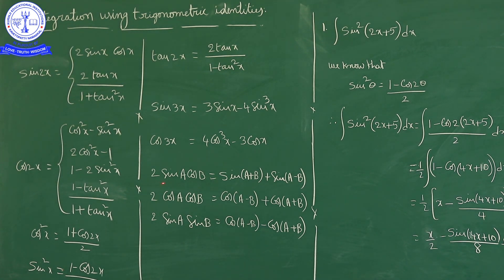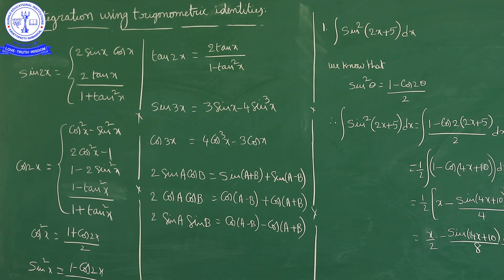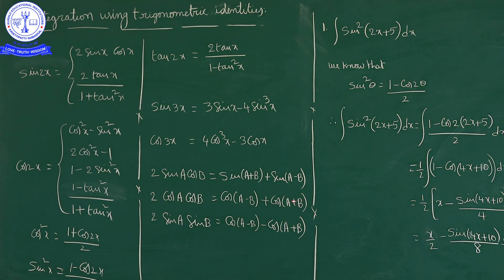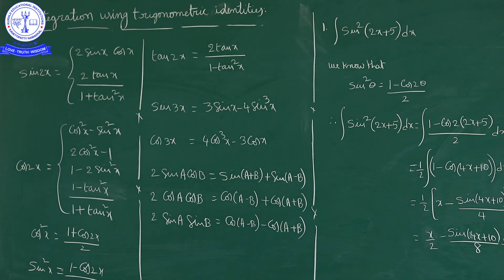Next formula: 2 sin A cos B equals sin(A+B) plus sin(A−B). This comes from adding sin(A+B) and sin(A−B) expansions. Also, 2 cos A cos B equals cos(A−B) plus cos(A+B), and 2 sin A sin B equals cos(A−B) minus cos(A+B). The logic is: for a sin-cos combination, use the first; for cos-cos or sin-sin, use the cos-cos formula. These are the formulas you need to know.